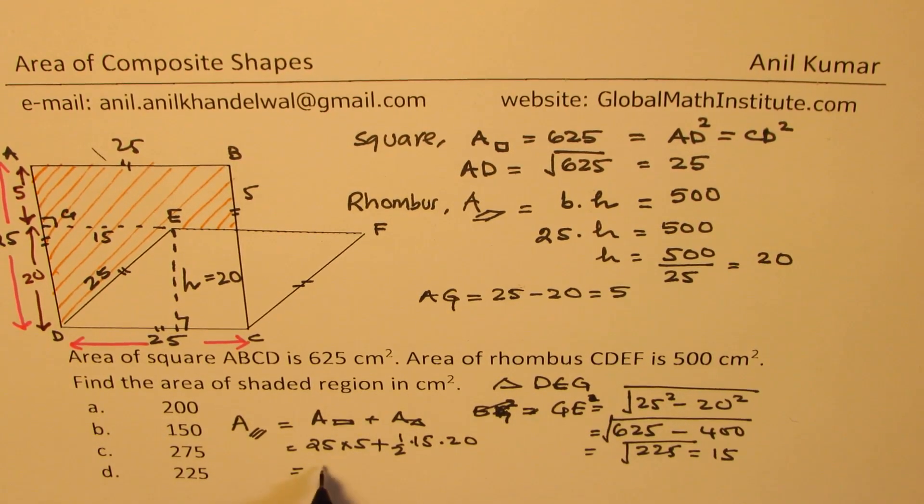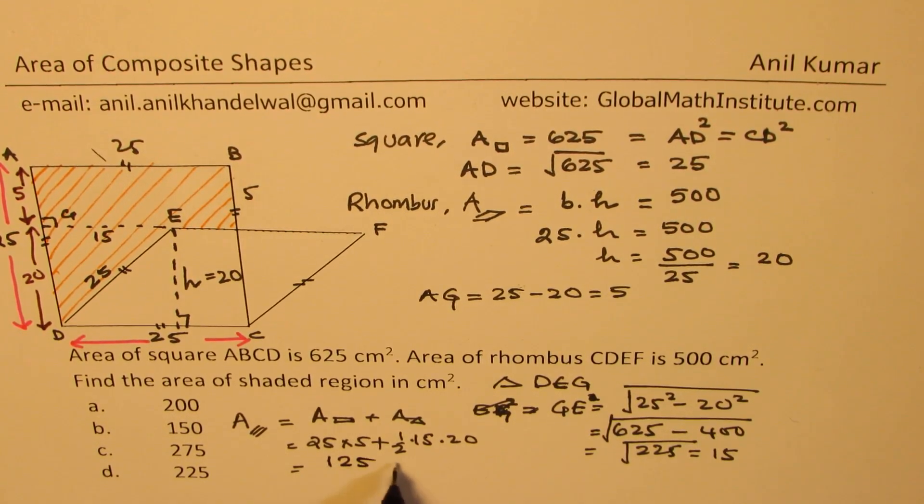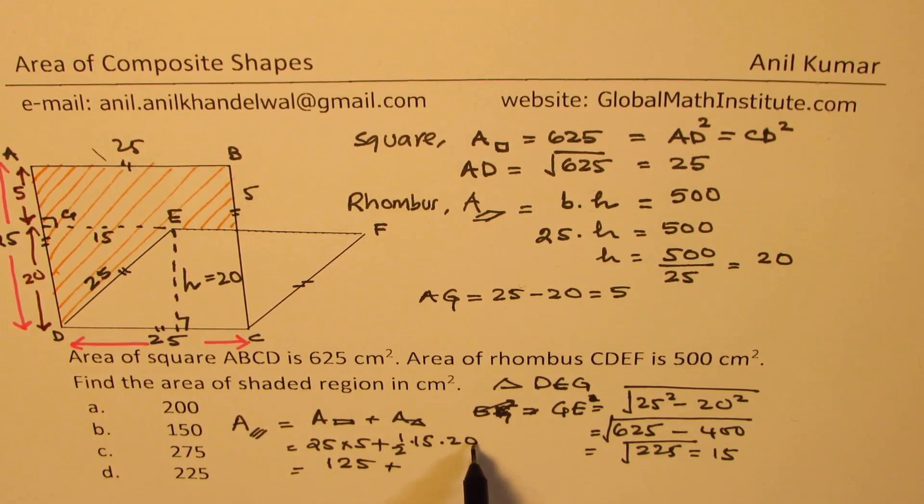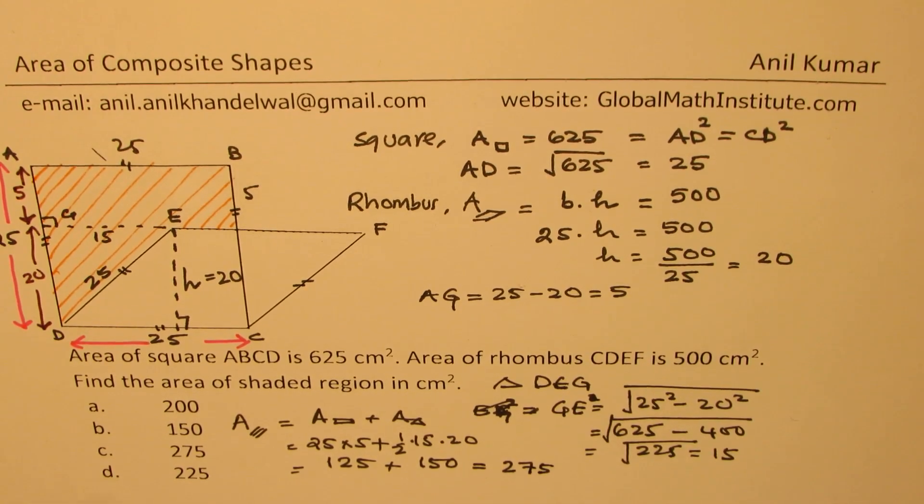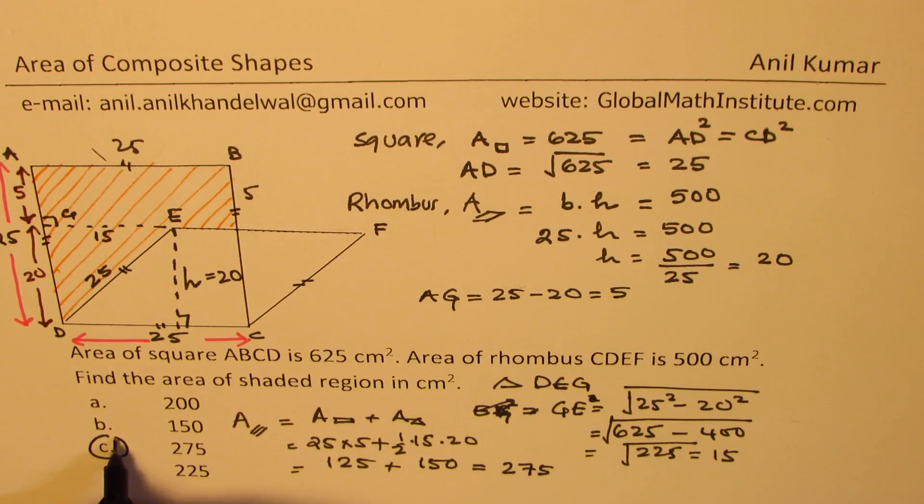25 times 5 is 125. Plus half of 20 is 10. So we get 150 here. And when you add them all, we get 275. And therefore, option C is the correct option.